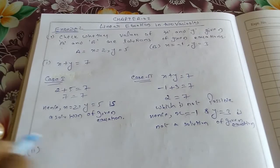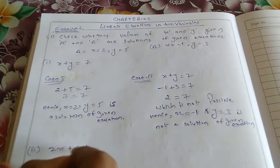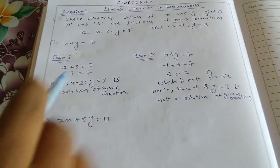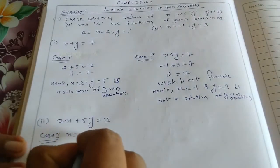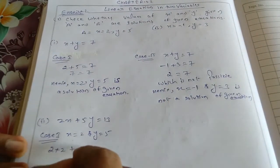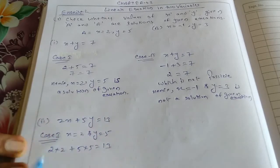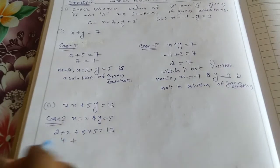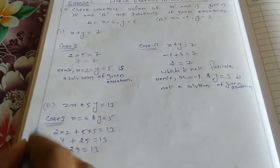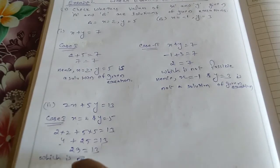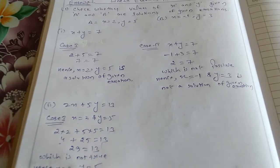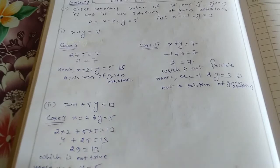Second question: 2x plus 5y equals to 13. Case Number 1 — putting x equal to 2 and y equal to 5: 2x plus 5y equals 4 plus 25 equals 29, not equal to 13. So 4 plus 25 makes 29 equals 2, which is not possible, which is not true. Hence, x equals to 2, y equals to 5 is not a solution of the given equation.